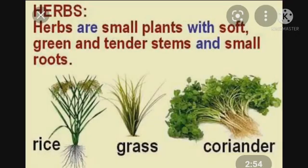Next we have another kind of plant known as herbs. Herbs are small plants with soft, green and tender stems and small roots. Examples include rice, grass, coriander, and mint.